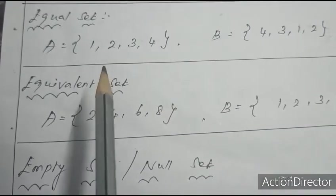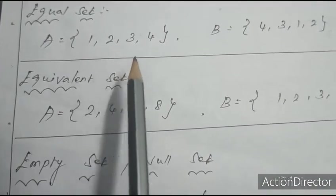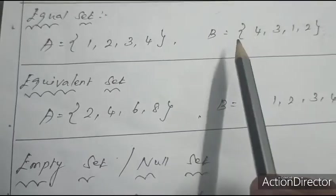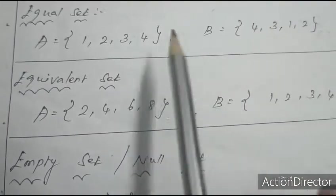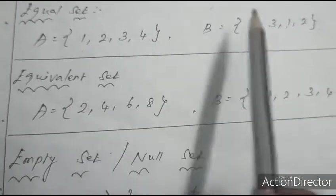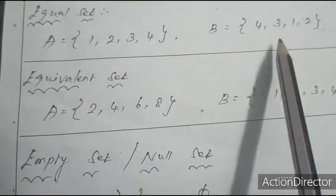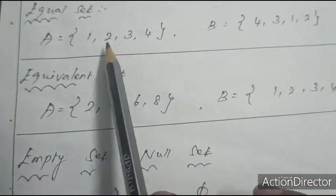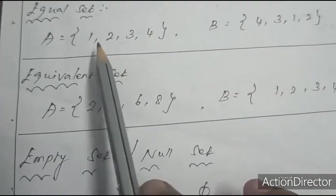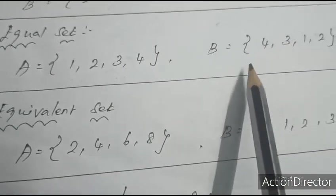Equal set: A = {1, 2, 3, 4} and B = {4, 3, 1, 2}. Comparing: 1=1, 2=2, 3=3, 4=4 — the elements of both sets are the same. Therefore A = B; it is an equal set.